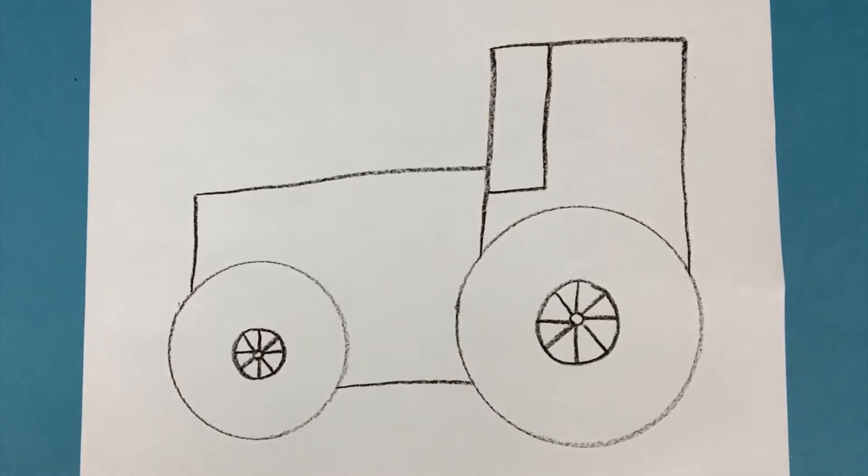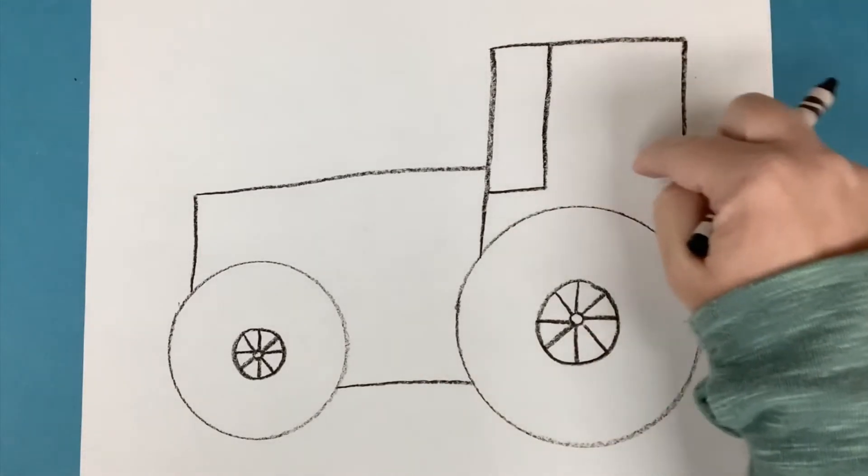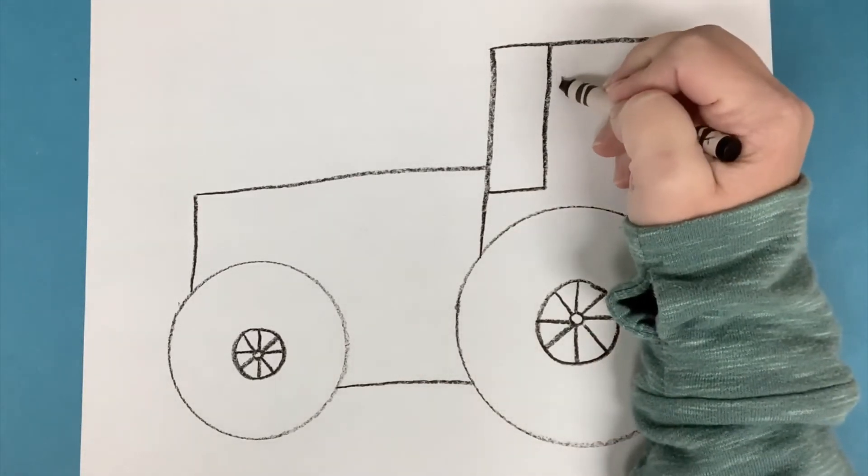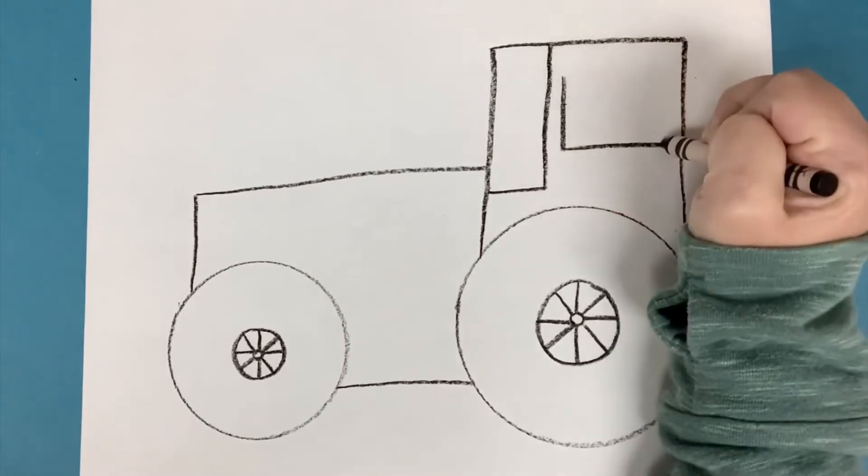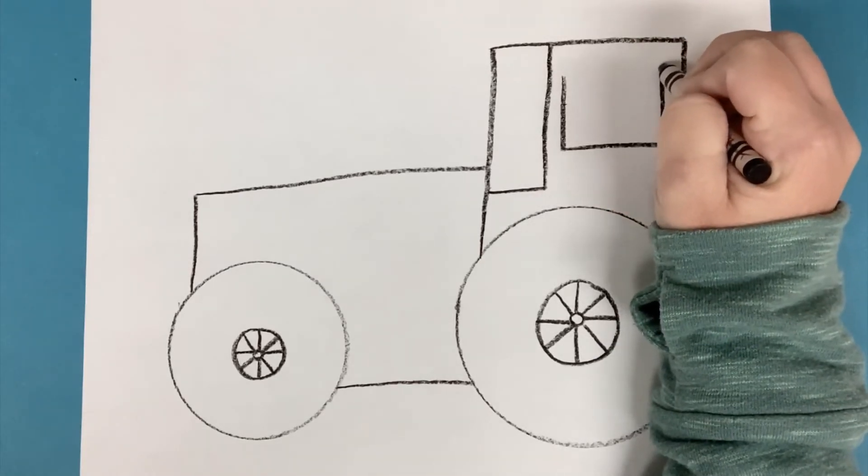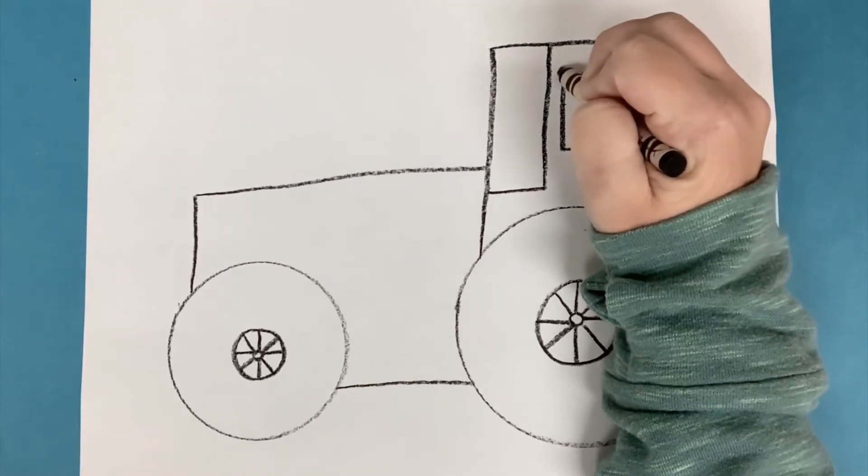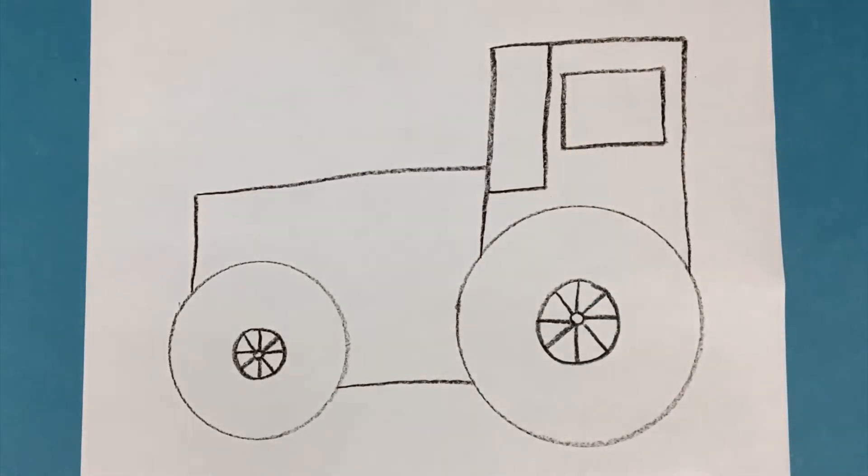Now we'll make another rectangle for a side window right over here. Vertical, horizontal, vertical, horizontal. There we go.